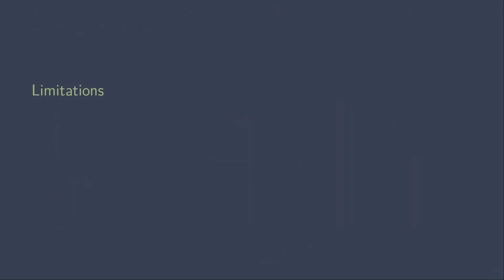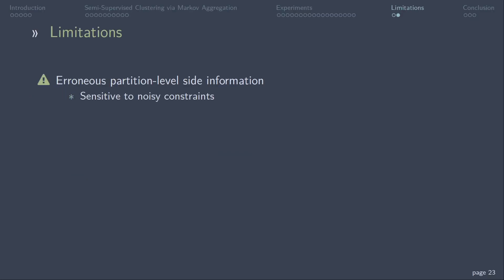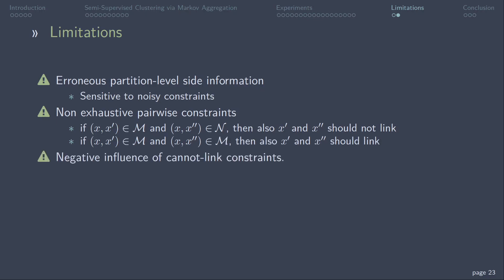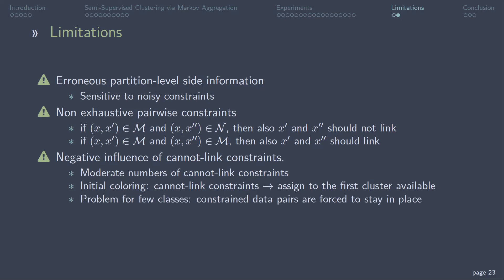Limitations. After seeing that COMAC can compete with state-of-the-art clustering algorithms in those two experiments, we still have to talk about some limitations. Erroneous partition level side information. Our algorithm is highly sensitive to noisy constraints. When the pairwise constraints are not exhaustive, we need to propagate them to possibly increase accuracy. Lastly, cannot-link constraints can have negative influence for datasets with few classes and for moderate numbers of cannot-link constraints. In the initial coloring, the nodes connected by cannot-link constraints are assigned to the first cluster available. For example, for two classes the problem is that in the sequential algorithm, after the greedy coloring, the constrained data pairs are forced to stay in place as no free class is available. A detailed discussion of all points mentioned here can be found in our full-length paper.